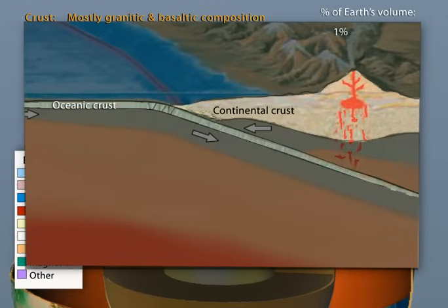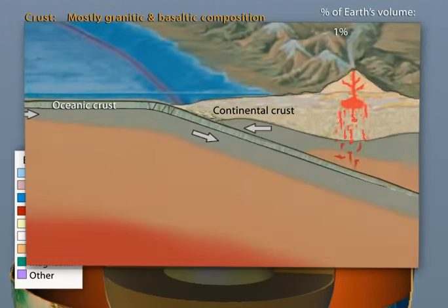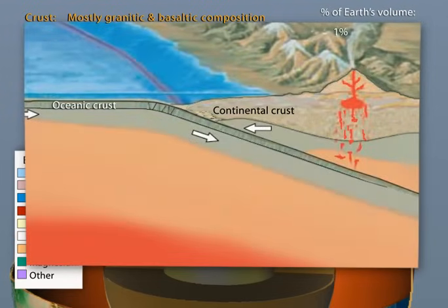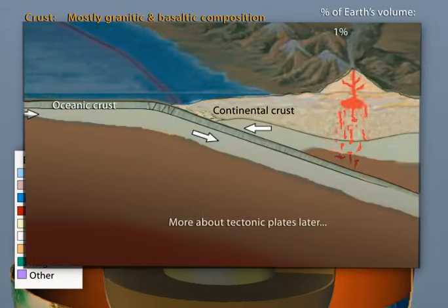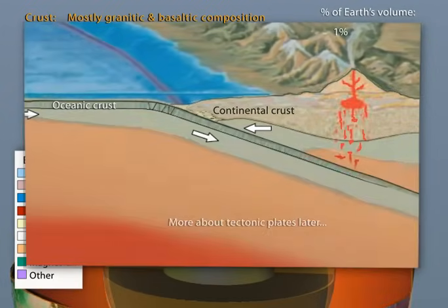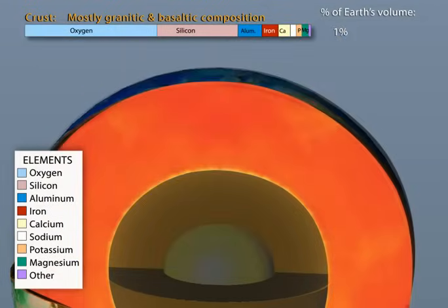This difference in density and thickness of these two types of crust is the reason why the Earth has oceans and continents. The crust is often mistaken for the tectonic plates. However, the crust is just the top part of the tectonic plates. We'll return to that in a moment, but first back to the three layers.